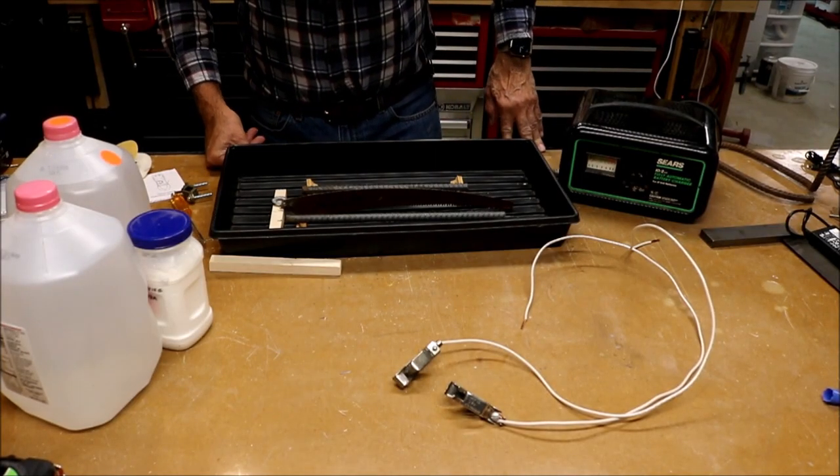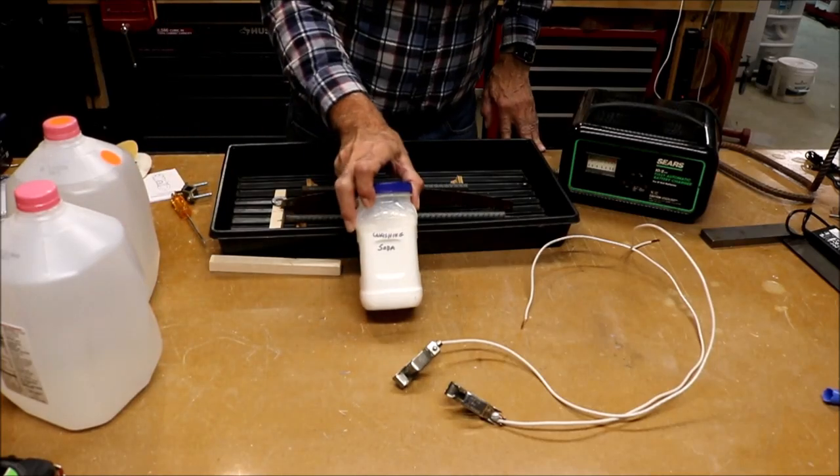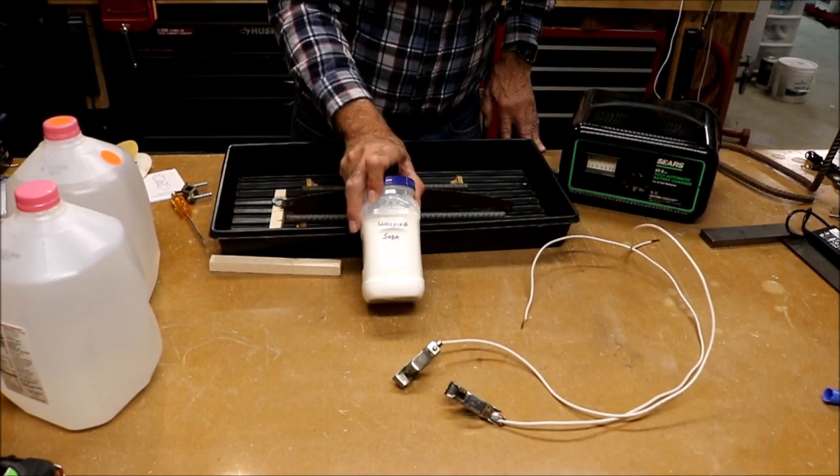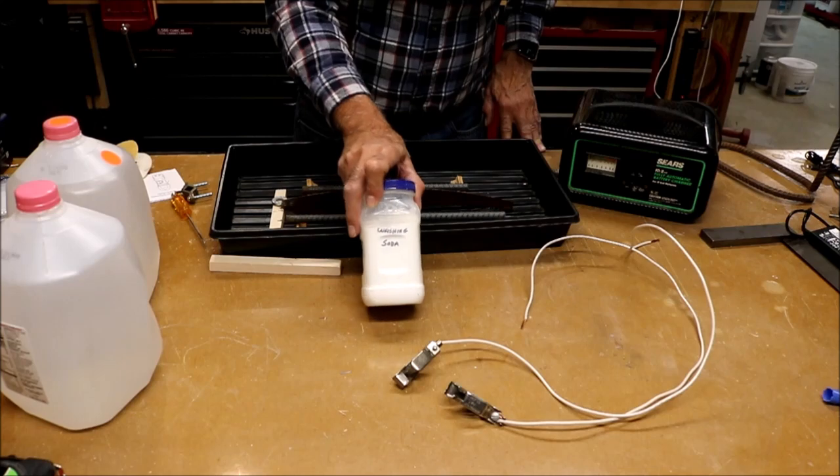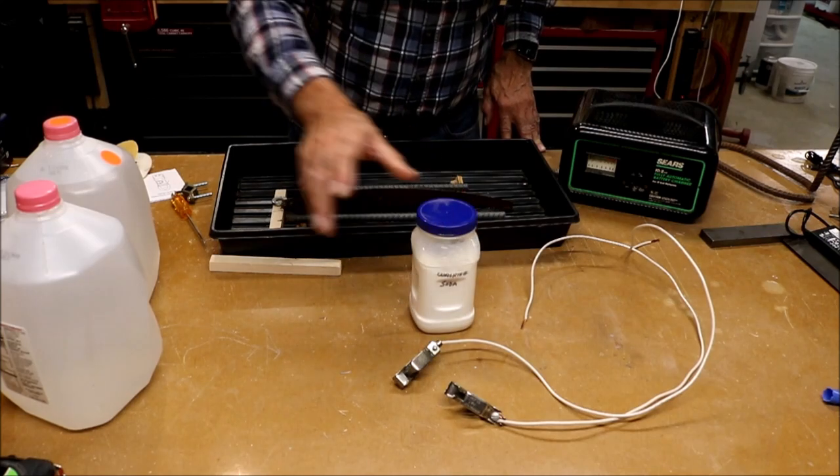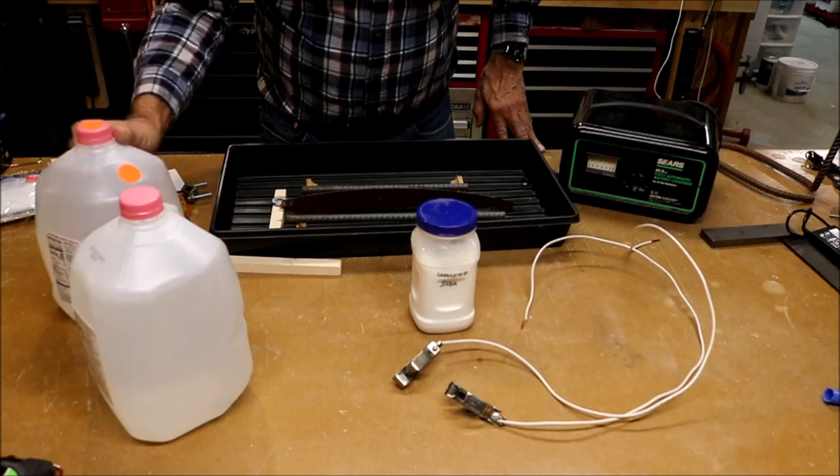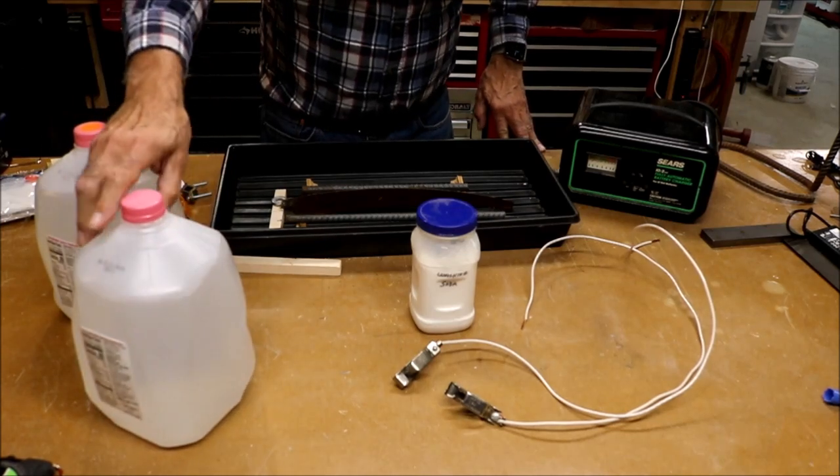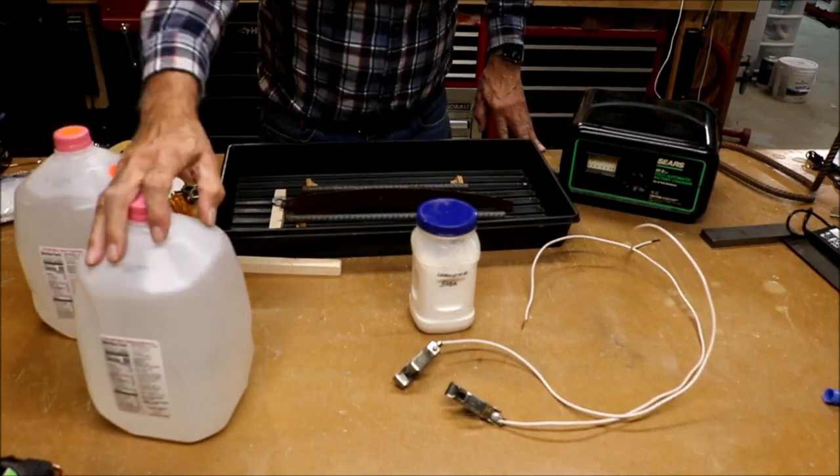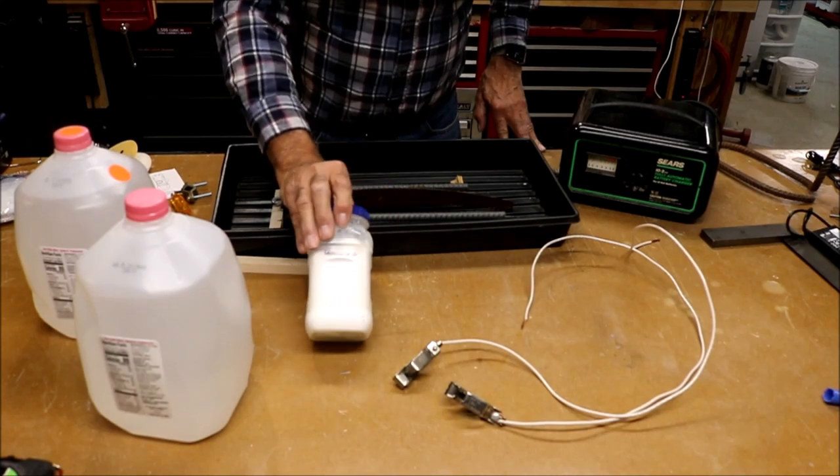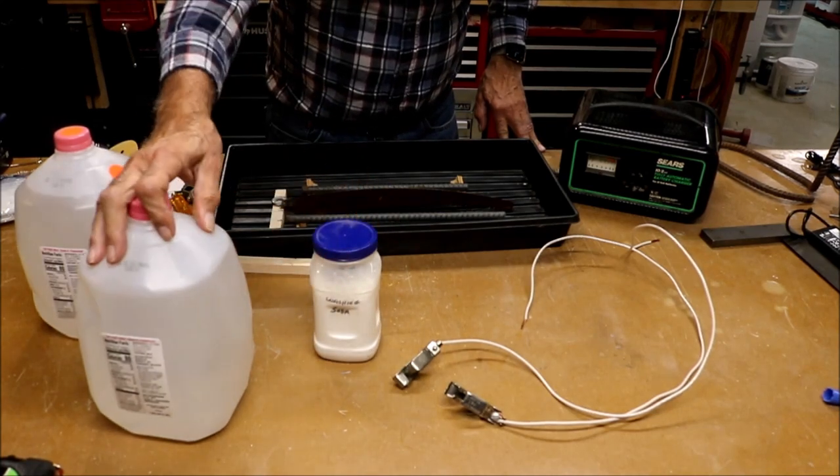This is the material list that you'll need. You'll need some washing soda. Sometimes it's called super washing soda and you can find that in the supermarket. You need water. Each one of these is a gallon of water. I might need two, but you need at least one gallon of water. And you mix one tablespoon of the washing soda per gallon of water.